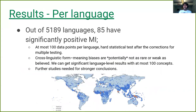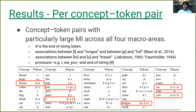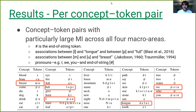In the paper we also did a per-language analysis and a per-concept per-phoneme analysis where we tried to find specific phonemes that were statistically more predictable given the meaning — meaning they were strongly associated together. That's it for part three of the presentation; I'll see you at the last part.